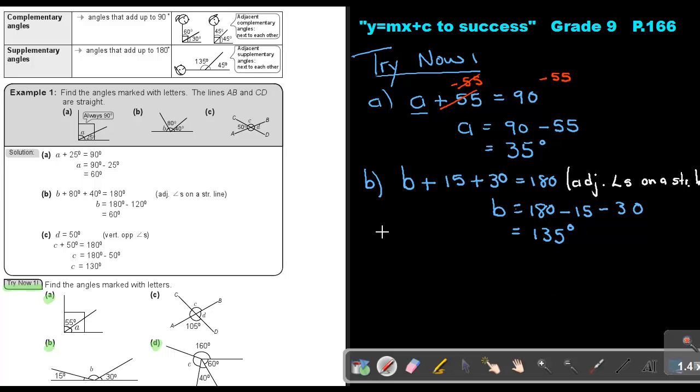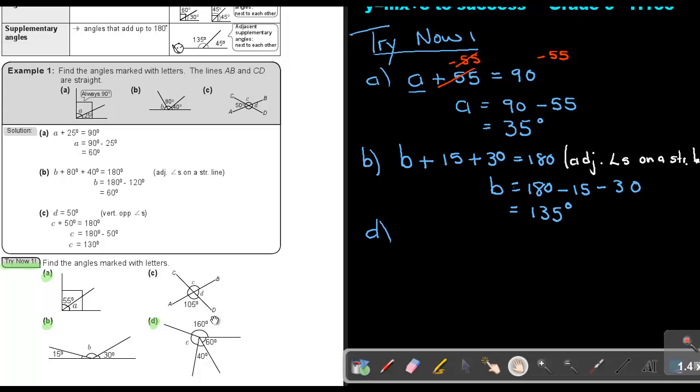Then the next one, number D. Now number D, if I move it up a little bit, you will see that this is a revolution. So basically, to do that one, I will just say, and now let's just start, we're going to say E plus the 160 plus 60 plus 40, it's going to be equal to 360. And what is going to be my reason? It's angles at a point.